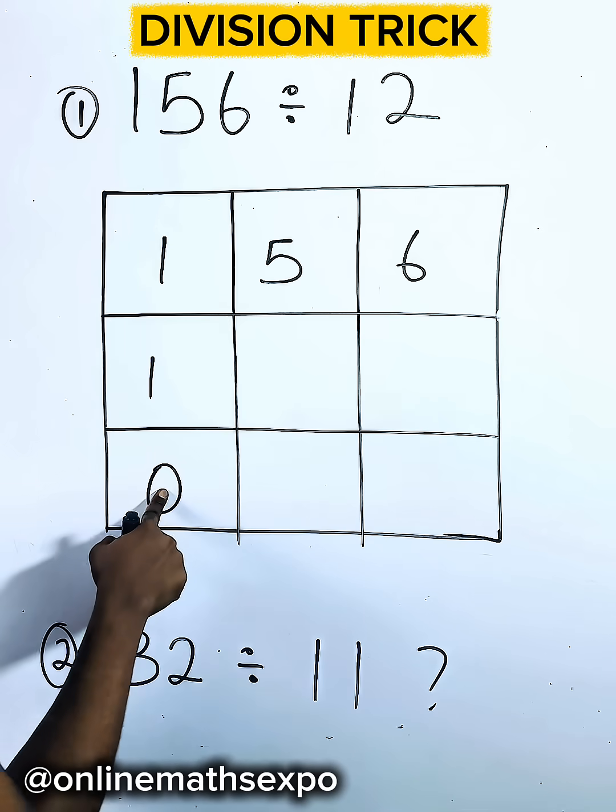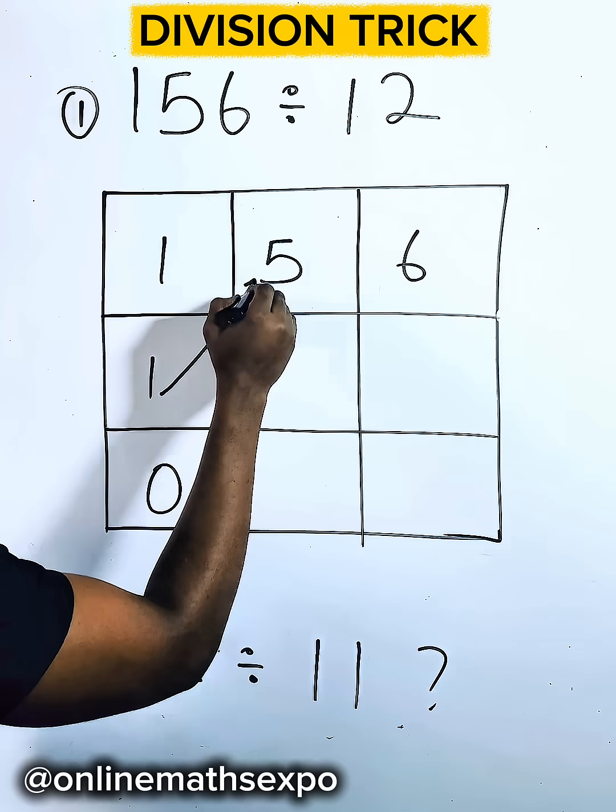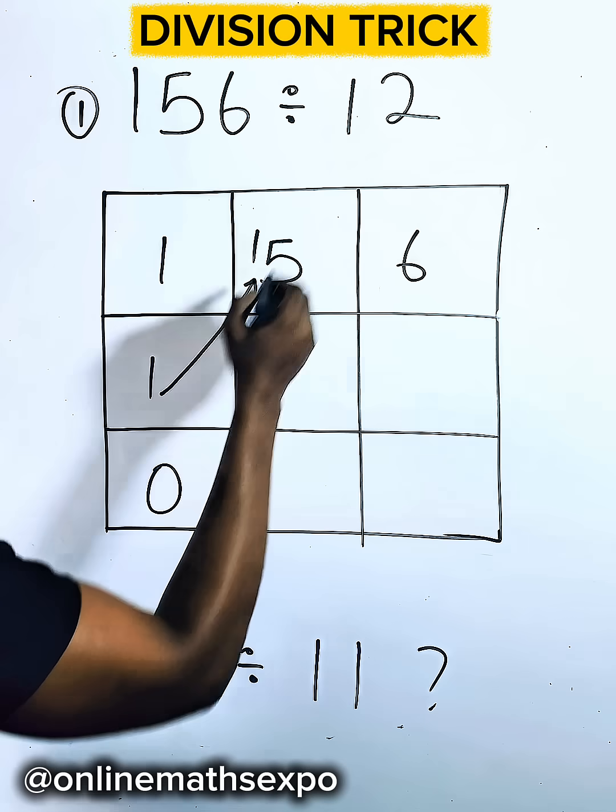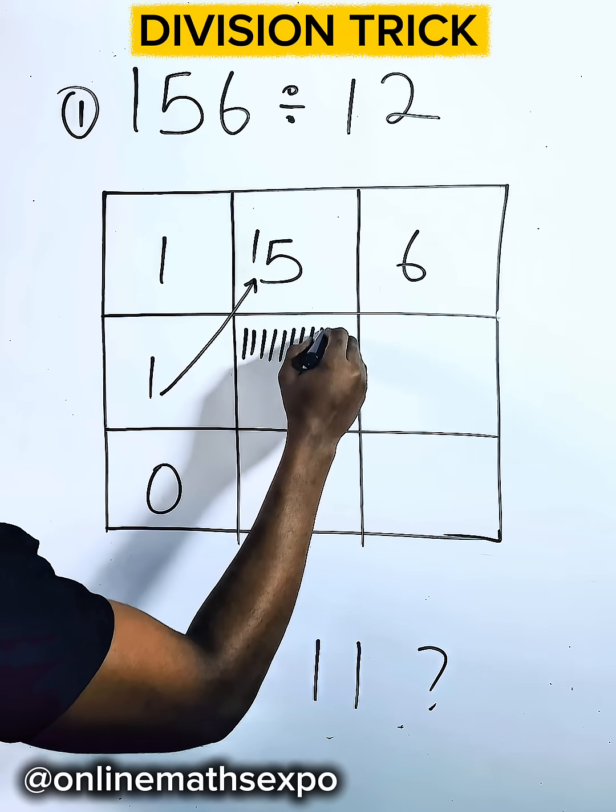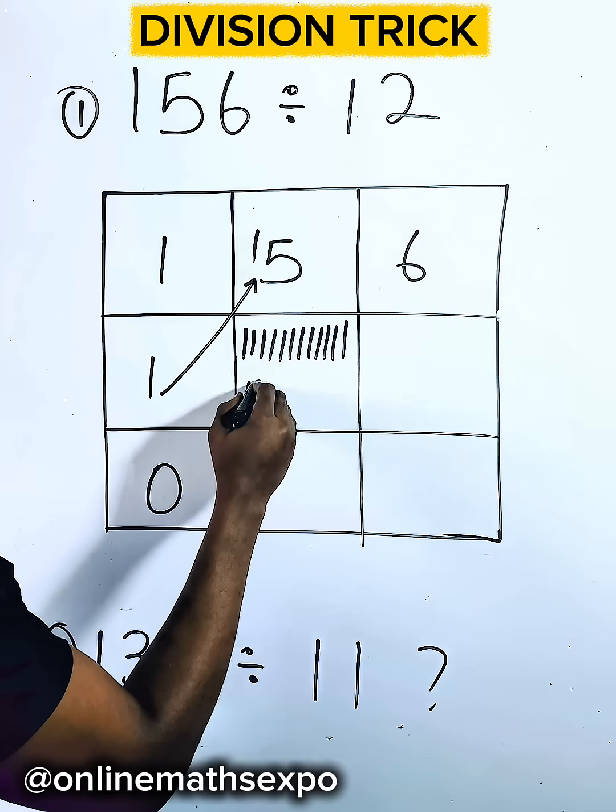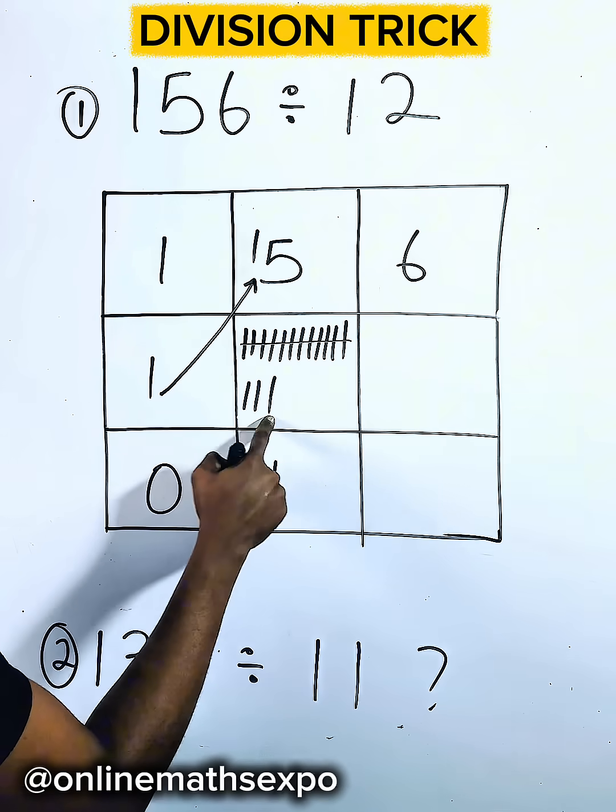So in that case, I'm going to take the 1 to the next, which is 5, it becomes 15. So I will share 15 for 12: 3, 4, 5, 6, 7, 8, 9, 10, 11, 12, 13, 14, 15. So you see we have one 12, you write 1 here. This one remaining, take it to the next.